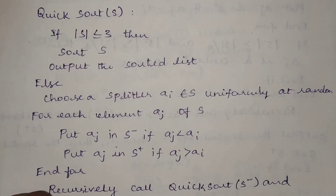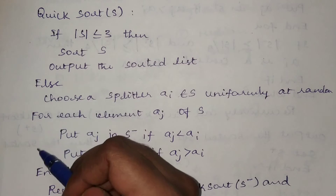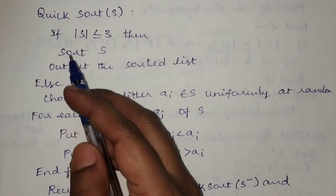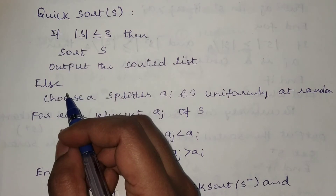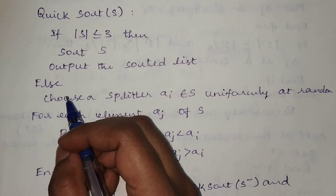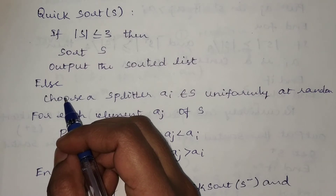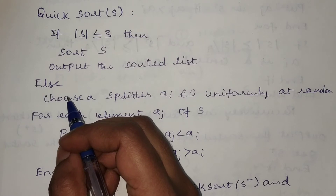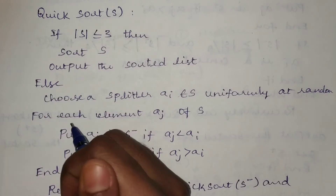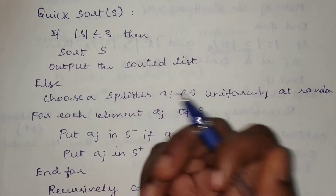In this video we will discuss randomized quicksort and how it differs from the normal quicksort method. In the normal method, the running time of quicksort in the worst case analysis is O(n²). We are going to reduce that to O(n log n) with the help of this randomized approach.